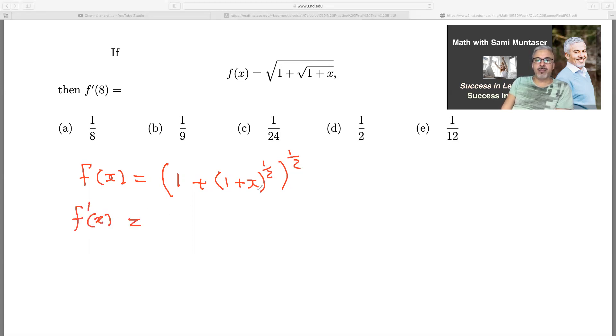So that would equal, bring this half down first time, and then you just keep everything inside the same for now. And then take away one from there, that will give you negative one half. Multiplies. Now you have to go and do the derivative of what's inside. So the derivative of one is just zero. So you don't have to write anything there.